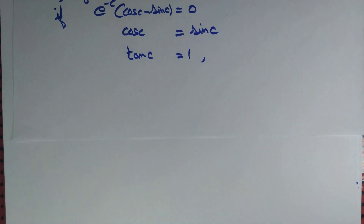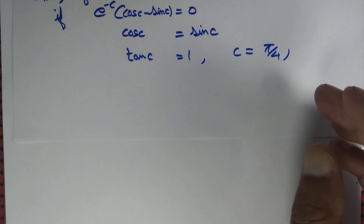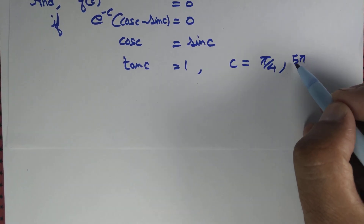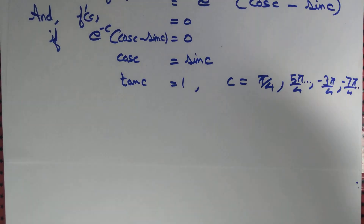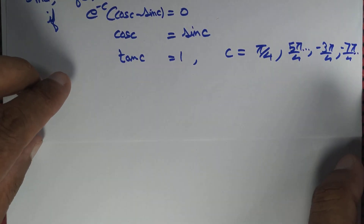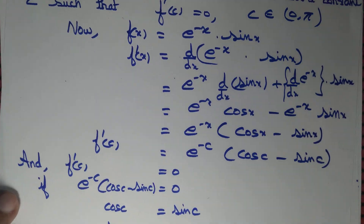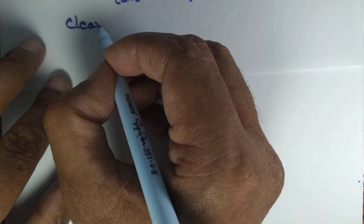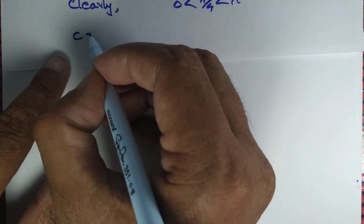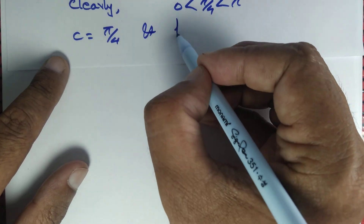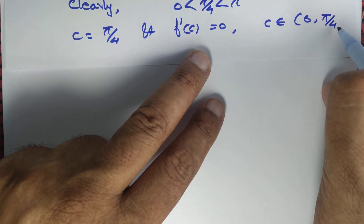Is that possible? Yes, it is possible for many different choices of c, such as c = π/4, 5π/4, −3π/4, and so on. We just need one constant c such that f'(c) = 0 and c lies between 0 and π. Clearly, c = π/4 satisfies this since π/4 > 0 and π/4 < π. Therefore, we have determined c = π/4 with f'(c) = 0 and c ∈ (0, π), and we have verified Rolle's theorem.